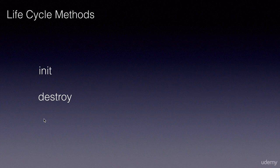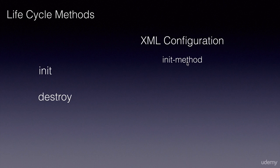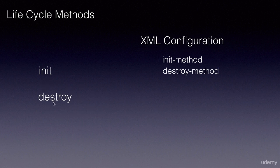There are three different ways in which we can configure and use these methods. The first is using XML configuration, where on the bean element we use the init-method attribute to specify which method in our class is the init method. Similarly, the destroy-method attribute can be used on the bean element to specify a cleanup method.